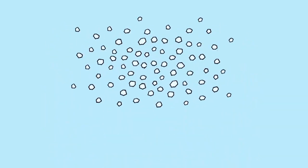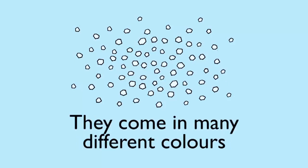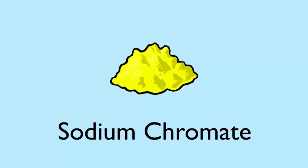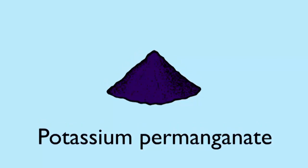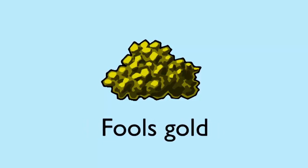You might wonder if all salts are small transparent crystals just like table salt. Certainly not. Salts come in many different colors. Sodium chromate is yellow, potassium permanganate is purple, and iron disulfide is shiny and metallic. In fact, it's a mineral commonly called fool's gold.